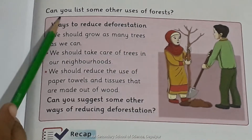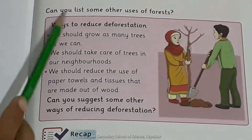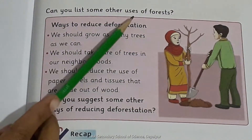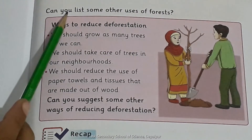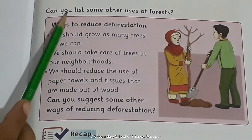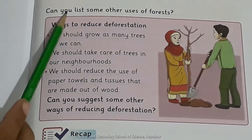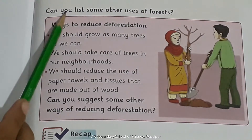Look at the next page — can you list some other uses of forests? کیا آپ مجھے forests کے کچھ اور uses بتا سکتے ہیں؟ Very good: forest سے حاصل ہونے والی لکڑی کو ہم آگ جلانے کے لیے استعمال کرتے ہیں، گھر بنانے کے لیے بھی استعمال کی جاتی ہے، اور forests میں herbs یعنی جڑی بوٹیاں ہوتی ہیں جنہیں ہم medicines بنانے کے لیے استعمال کرتے ہیں۔